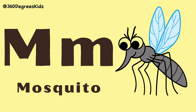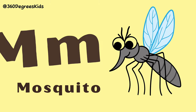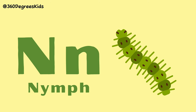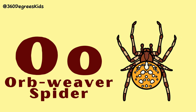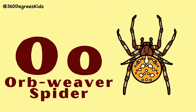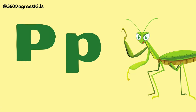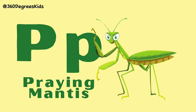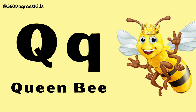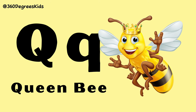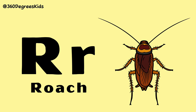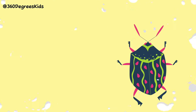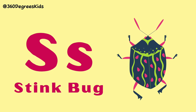M for Mosquito. N for Nymph. O for Orb Weaver Spider. P for Praying Mantis. Q for Queen Bee. R for Roach. S for Stink Bug.